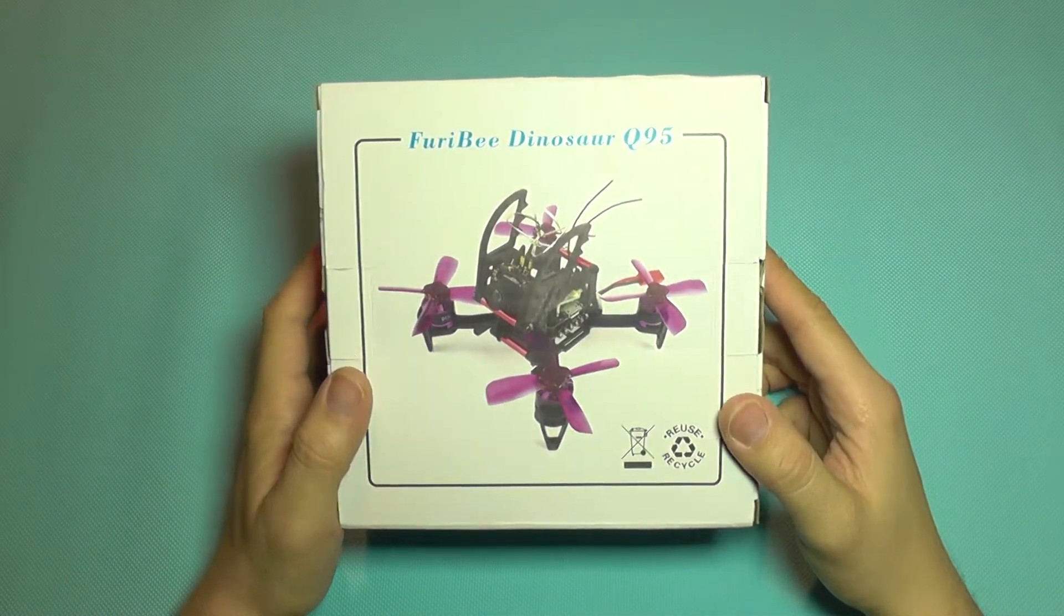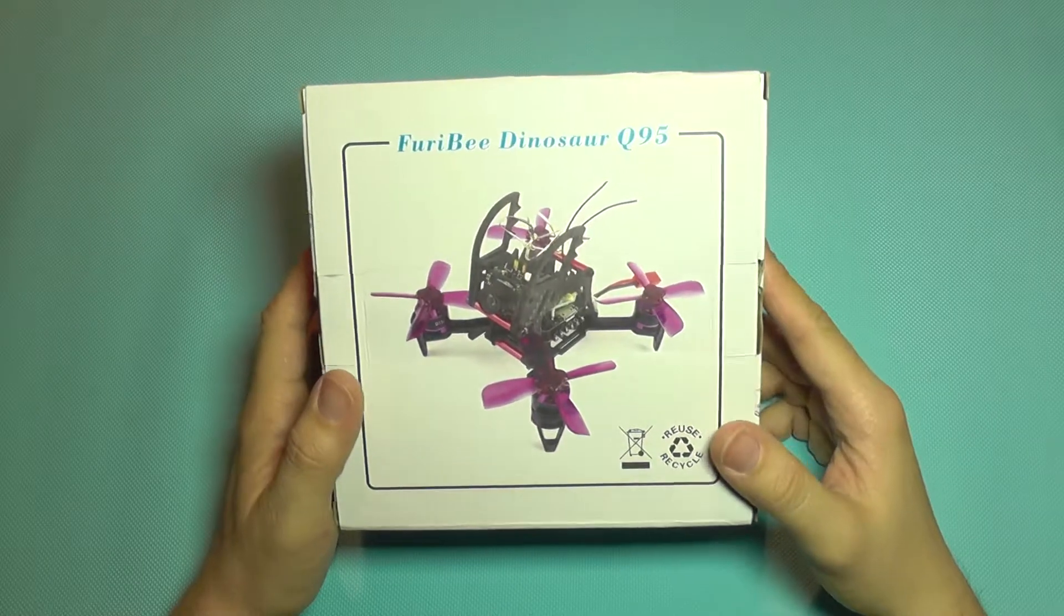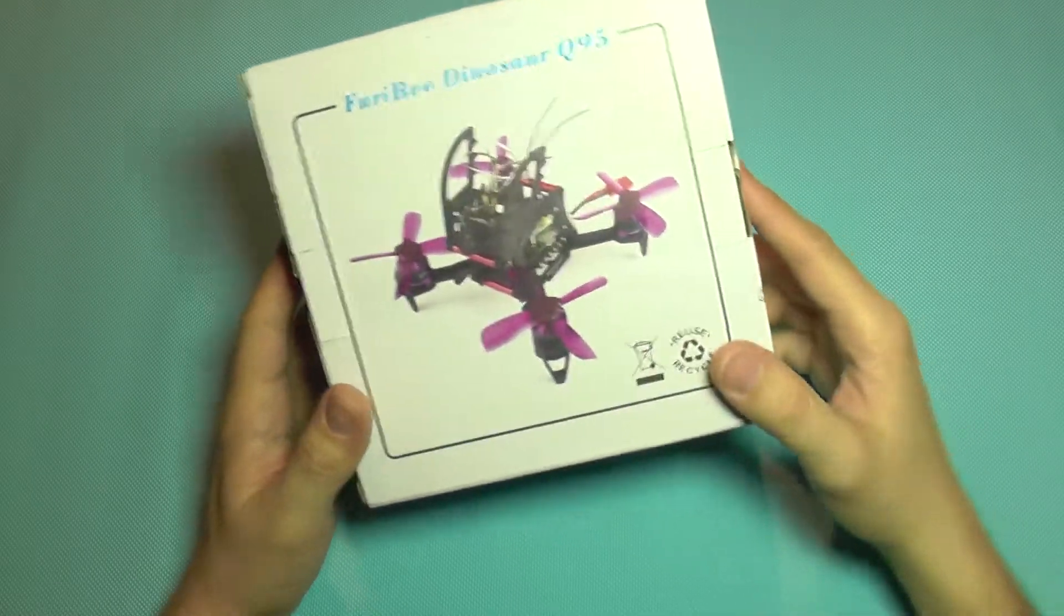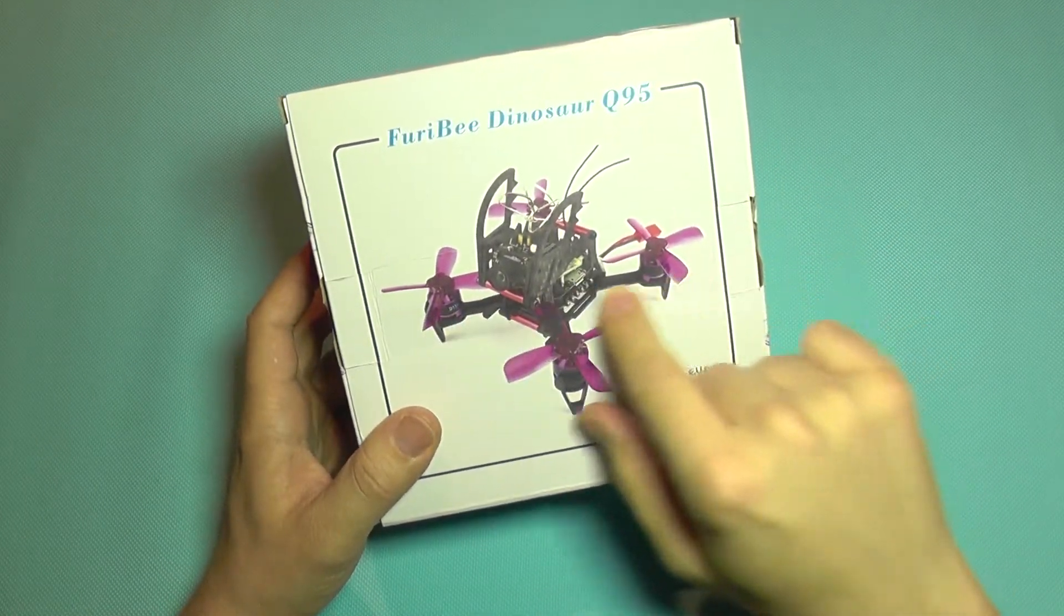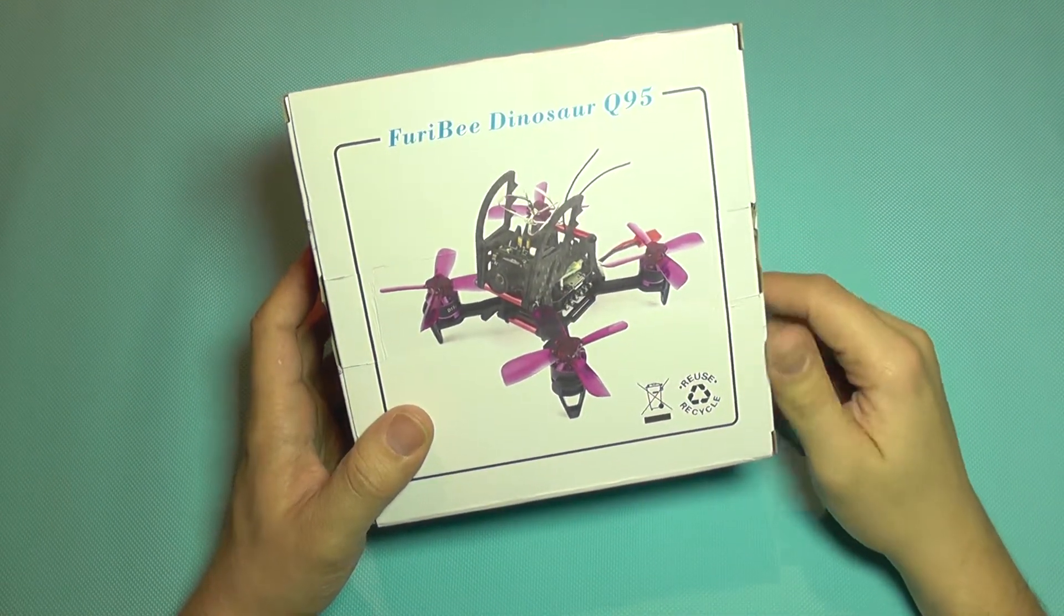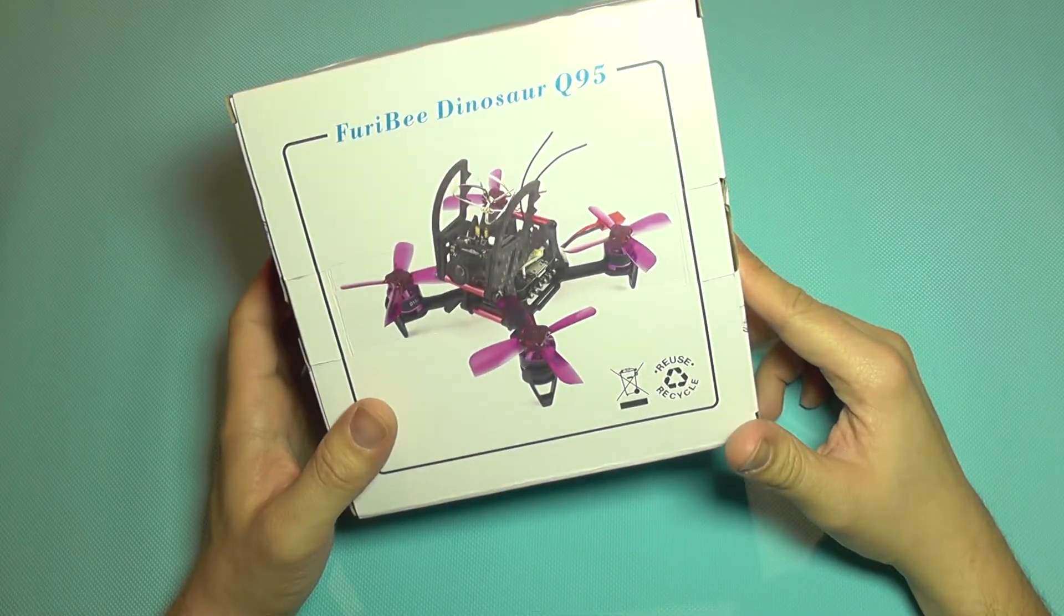Hello everyone and welcome to the review of the Furrybee Dinosaur Q95. This is of course 95mm, let's call it wingspan wheelbase quadcopter.